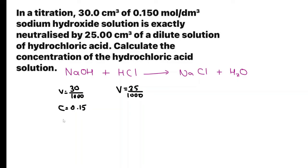We have both volume and concentration of sodium hydroxide. Let's work out the number of moles. N is equal to C times V. 0.15 multiplied by 30 divided by 1000 gives you 0.0045 moles.